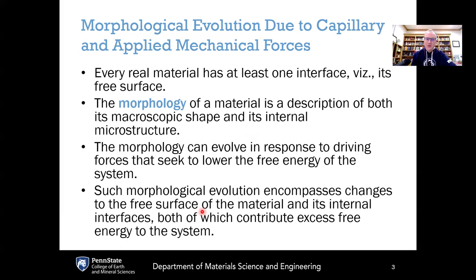What is morphology? Every real material has at least one interface — a free surface that interacts with the outside world. No real material is infinite. The morphology of a material is a description of both its macroscopic shape, its external surface, as well as its internal microstructures such as grain boundaries, grain orientation, sizes, and so on. The morphology can evolve in response to driving forces that seek to lower the free energy of the system. This encompasses changes to the free surface and internal interfaces, because they both contribute excess free energy.